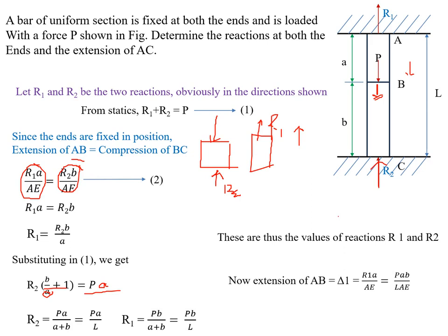Now that R1 and R2 are known, we can determine the deformation of member AB. Deformation of AB = R1·a / AE. Substituting R1 = Pb/L, we get deformation of AB = P·a·b / (L·AE). This is how we solve statically indeterminate problems of this type.